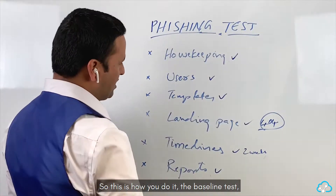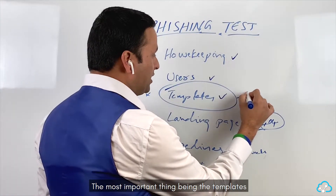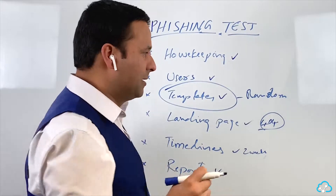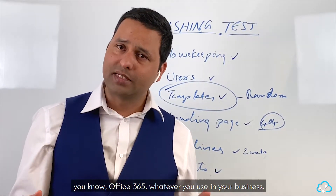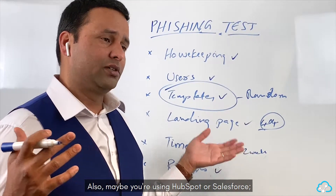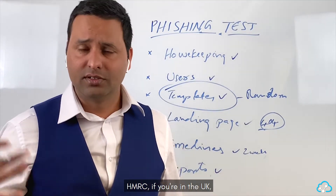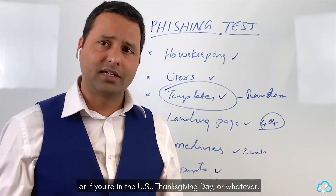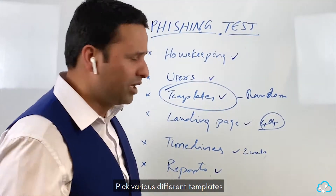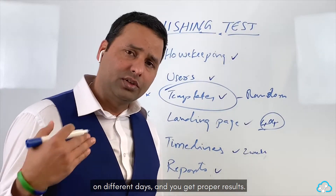Different platforms offer different report formats — PDF, CSV, and more. The most important thing for the baseline test is templates and randomizing them. Use really good templates relevant to your business — Office 365, HubSpot, Salesforce, HMRC if you're in the UK, or seasonal events like Thanksgiving in the US. Pick various different templates and randomize them so people get different ones on different days.